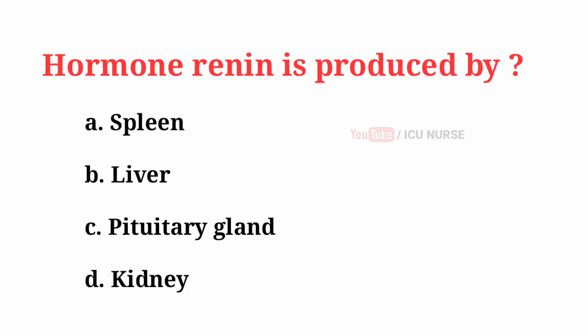Hormone renin is produced by? The correct answer is D: Kidney.